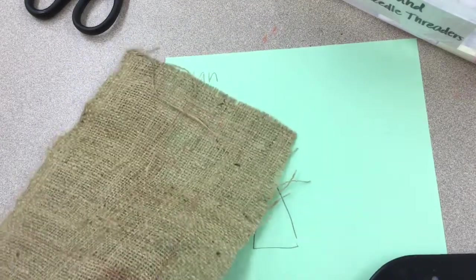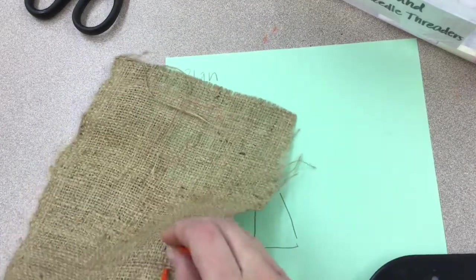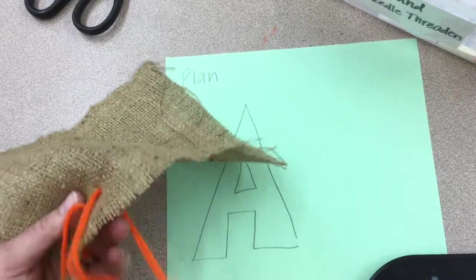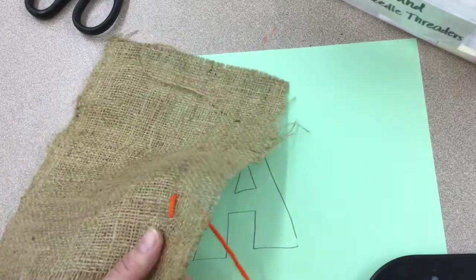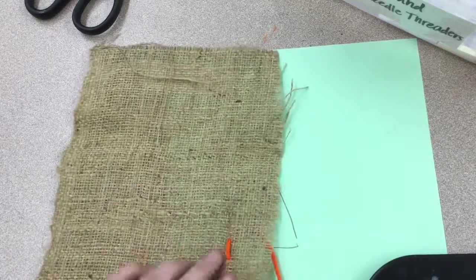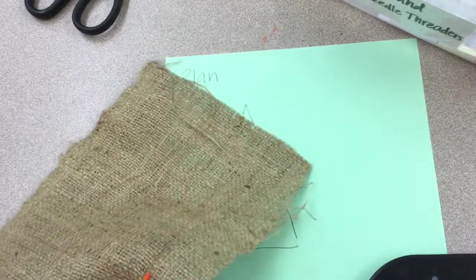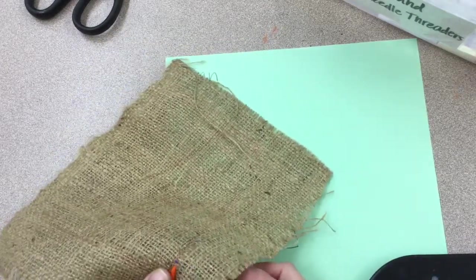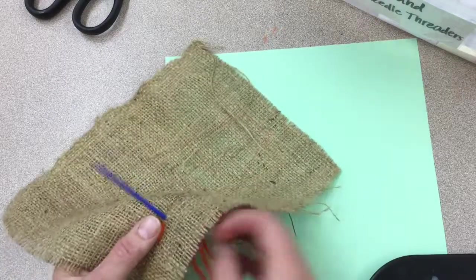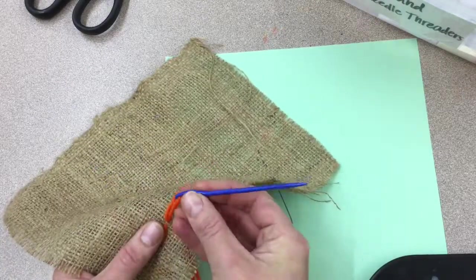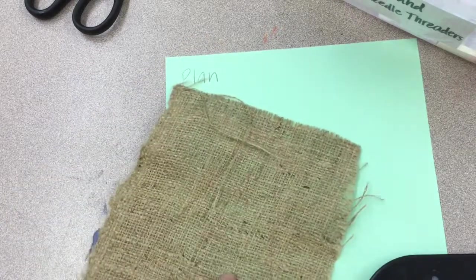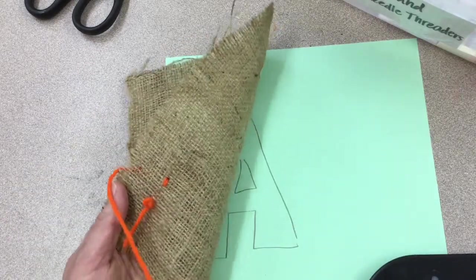I'm going to do what's called a running stitch. So because I came up through the fabric, now I'm going down through the fabric, pulling it all the way through. I'm flipping it over every now and then to make sure the back looks good. I leave a little space, needle comes up through the burlap, hold it by the eye of the needle, pull this all the way through again, flipping over to make sure that it looks good on the back side. No tangles, no knots.